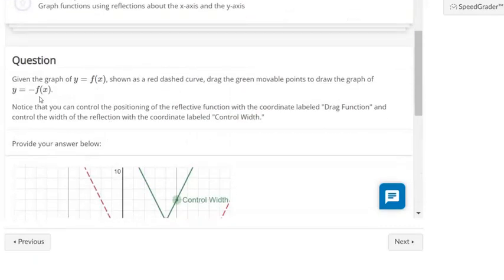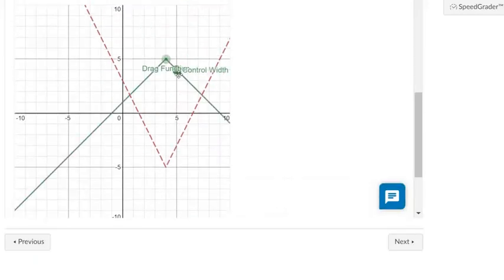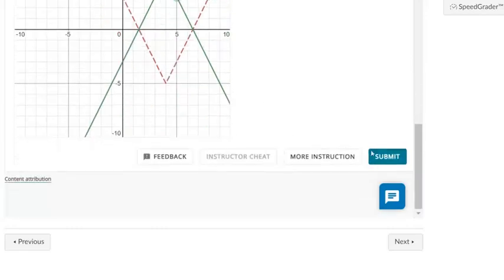So this function transformation says you're changing all the y values. Instead of 5, negative 3, we're going to do 5, positive 3. And that's it. That's the graph of the transformation.